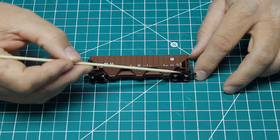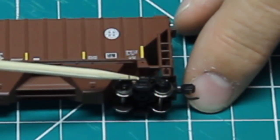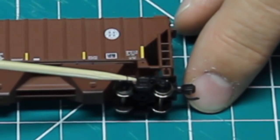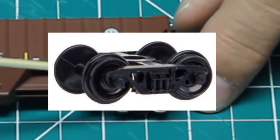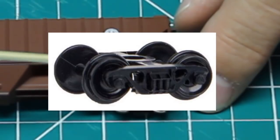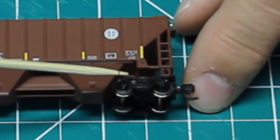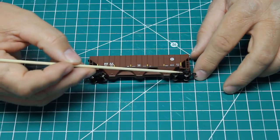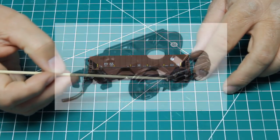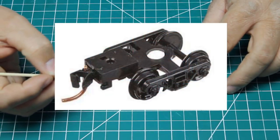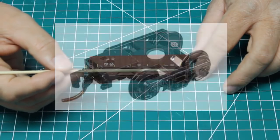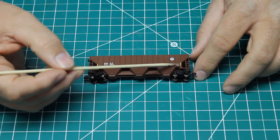Look at the number of springs on the side of the truck. Notice that this truck has three springs on it. For model railroading purposes, basically three springs denotes a 100 ton truck. If it has two, only two springs on it, then you're looking at a 70 ton truck. Now that's important to know, because you want to have about the right size truck for your car.